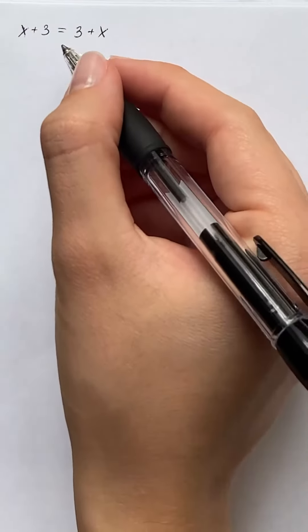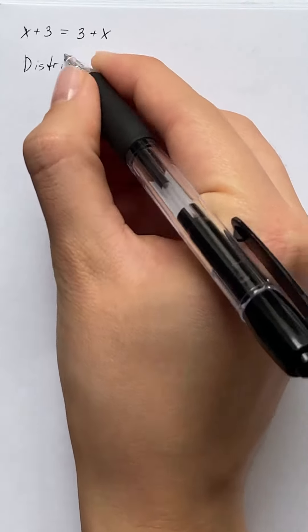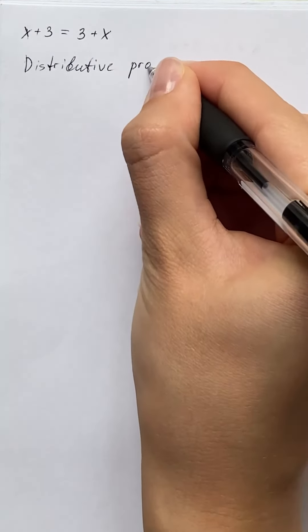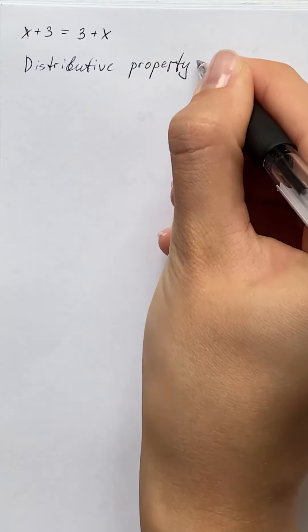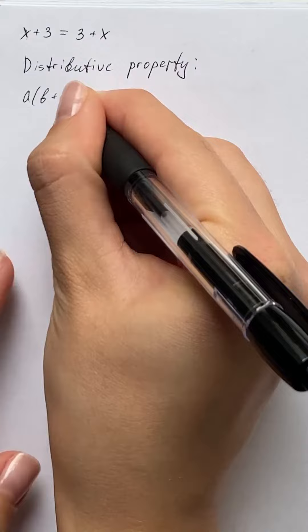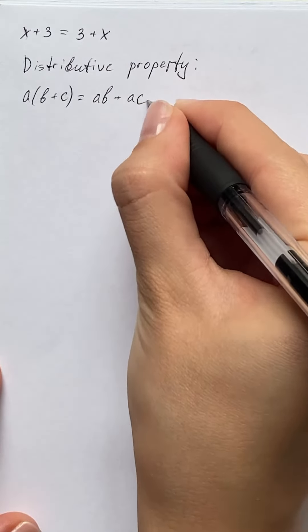We will look at some properties. The first one is the distributive property, which looks like a(b+c) = ab + ac.